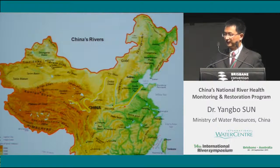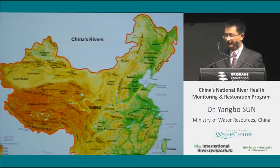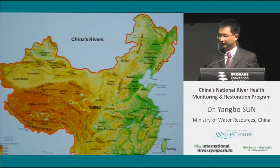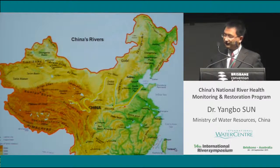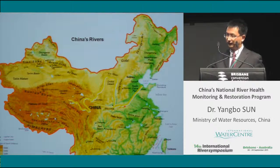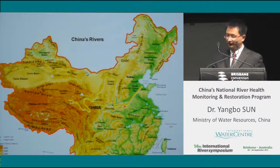From north, that means the Liao River, Hai River, Yellow River, Huai River, and Yangtze River. The south end is the Pearl River. In order to manage these water regions in China, our ministry has set up seven river basin authorities responsible for water resources planning and management in their own river basins.